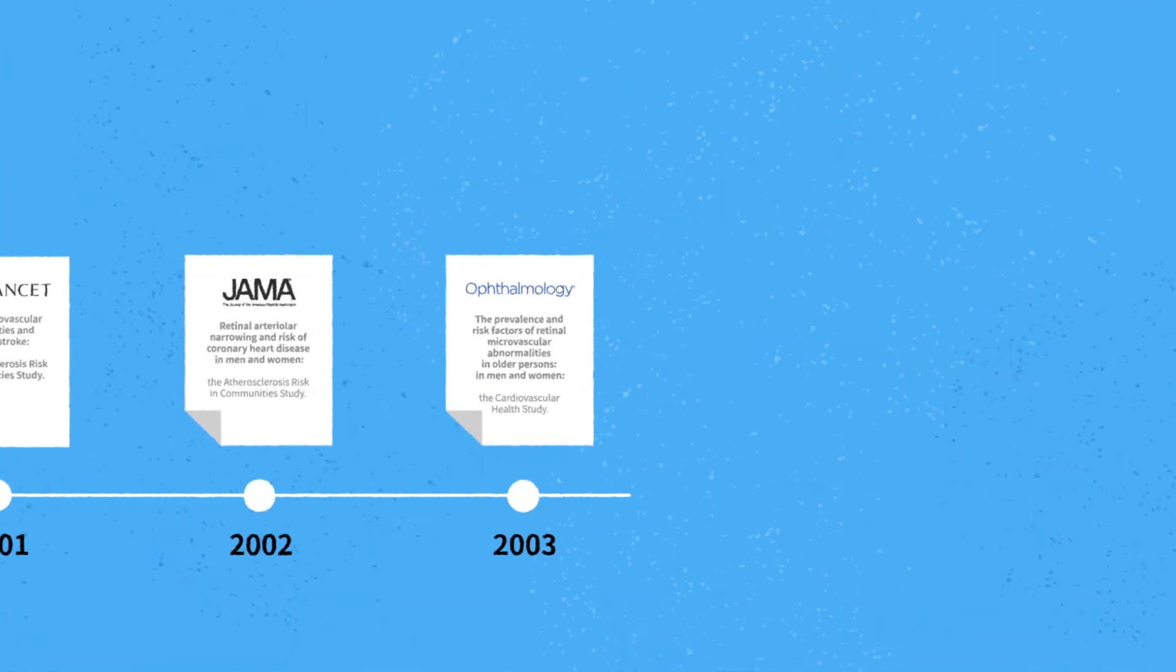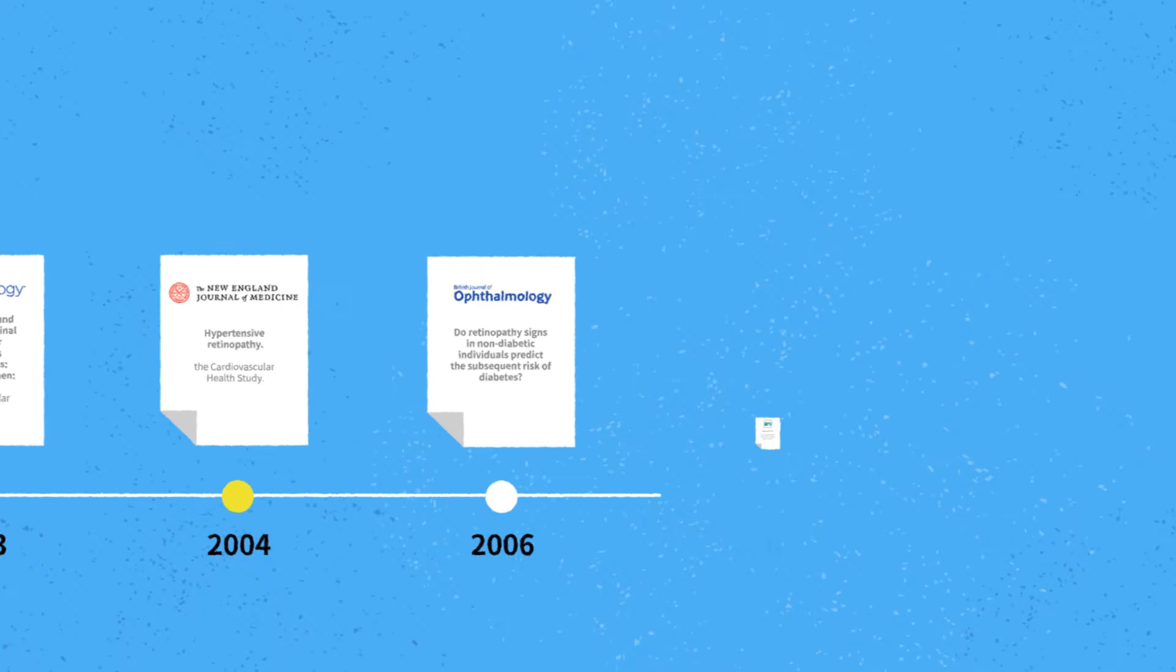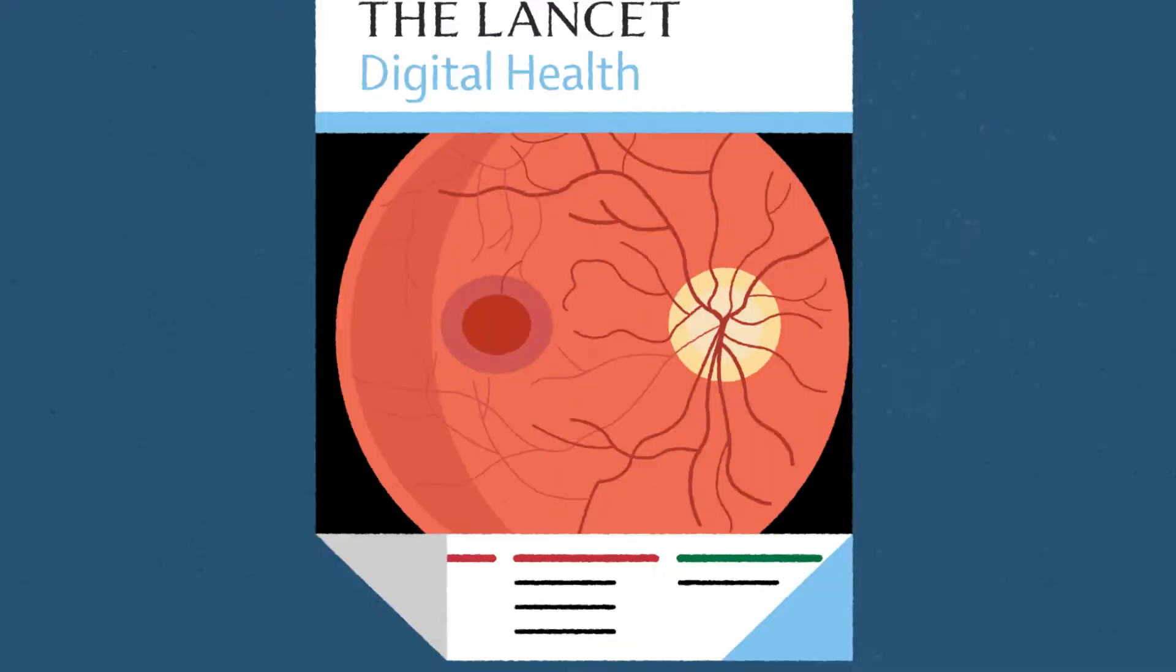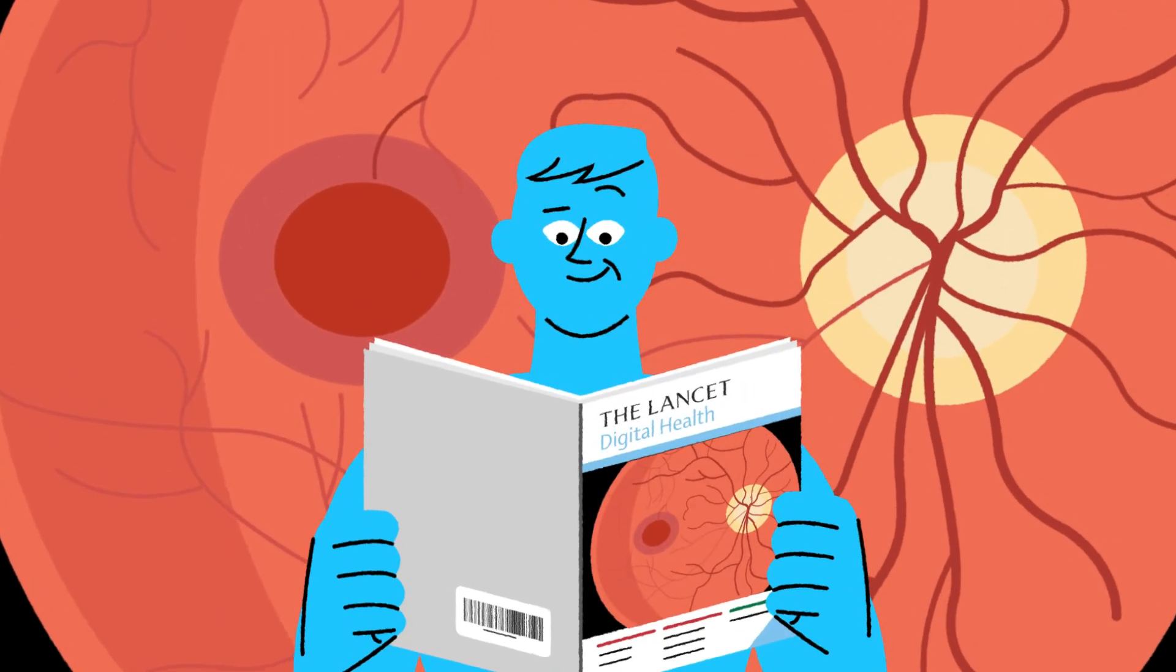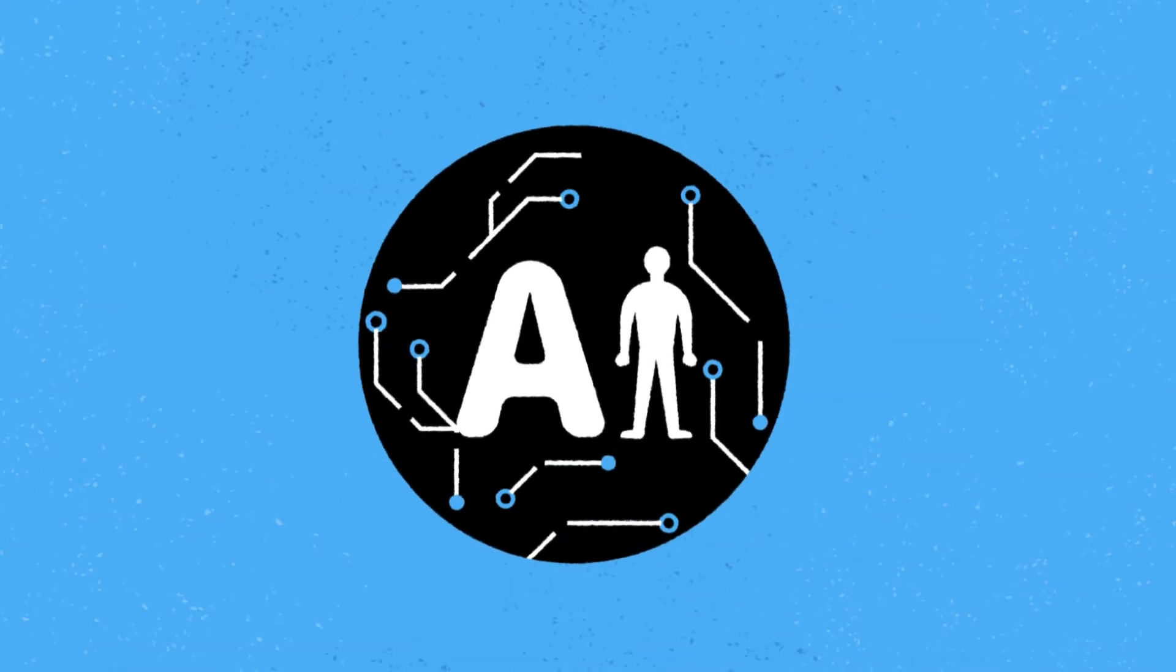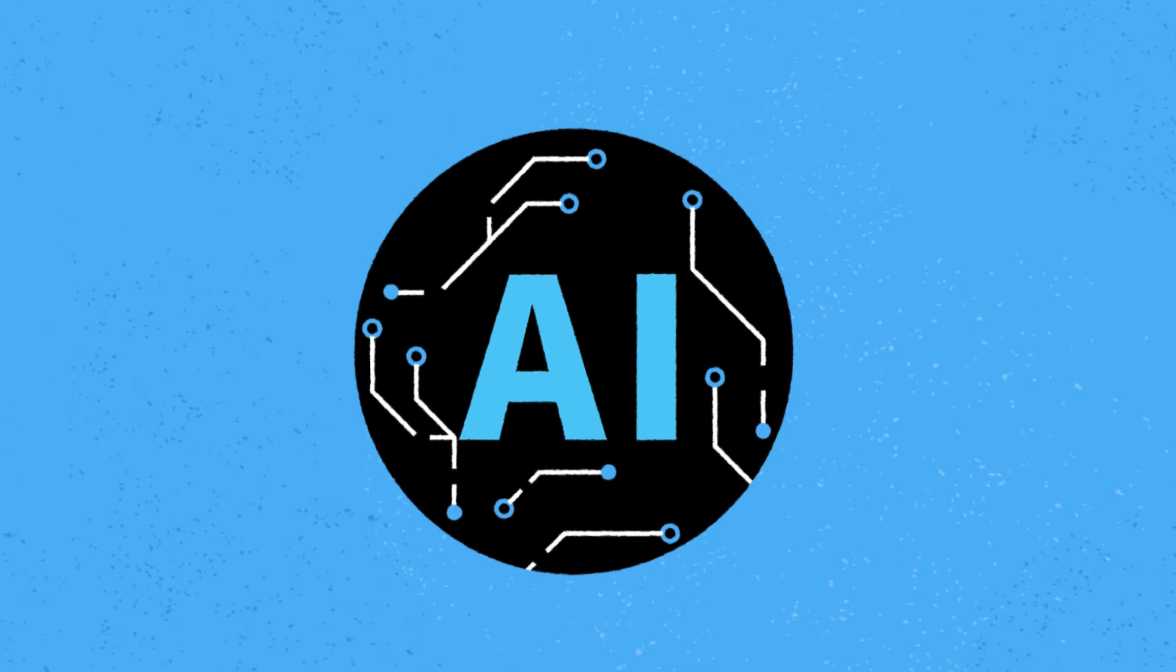Our understanding of eye-body relationships has evolved from decades of traditional statistical modeling in large population-based studies. The discovery of potential retinal features associated with systemic diseases has been enhanced by advances in artificial intelligence technology, specifically deep learning.